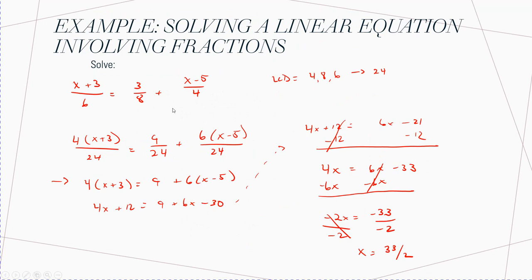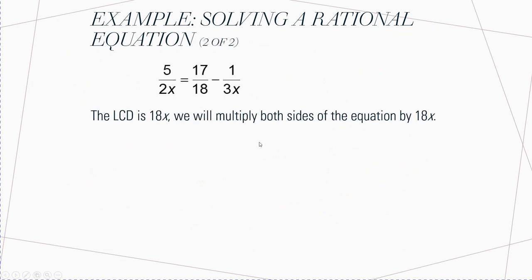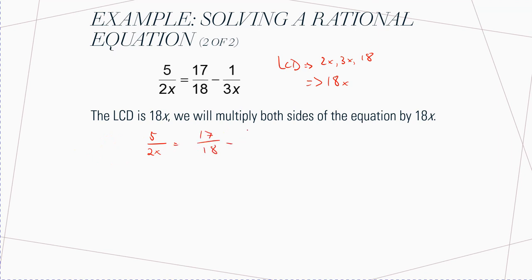It's just like how we were doing in previous examples — you're going to get it over an LCD. The LCD of 2X, 3X, and 18: I can make the 2 and 3 into 18 by multiplying the 2 by 9 and the 3 by 6. So the LCD is going to be 18X. What you're going to do is multiply everything, both sides of the equation, by 18X. So I'm going to take 5 over 2X equals 17 over 18 minus 1 over 3X.